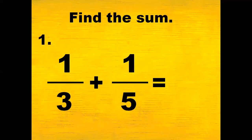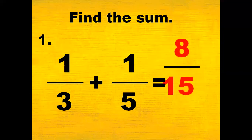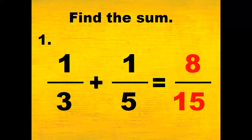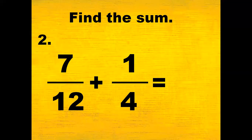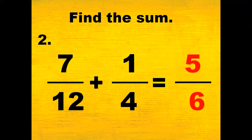Find the sum of 1 third plus 1 fifth. The answer is 8 fifteenths. If we got 8 fifteenths, then congratulations! Number 2: find the sum of 7 twelfths plus 1 fourth. The answer is 5 sixths. If we got 5 sixths, then congratulations!